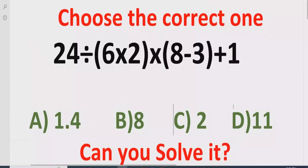Hello guys, welcome to my channel. Today we will solve another quiz related to arithmetic expressions. This quiz contains the basic operations: multiplication, division, addition, and subtraction. We have to solve this quiz using the BODMAS and PEMDAS method and find out which answer is correct. We have four answer choices: A is 1.4, B is 8, C is 2, and D is 11.